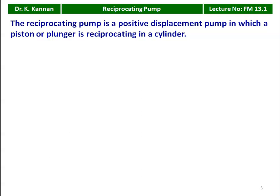A reciprocating pump is a positive displacement pump in which the piston or the plunger is reciprocating inside a cylinder. The positive displacement machine and the rotary machine are the two major classifications. For a rotary machine like the centrifugal pump discussed in the previous chapter, we can close the delivery valve and run it. But for a positive displacement machine, the delivery valve should be in open condition before we start the reciprocating pump — that is the operating condition.